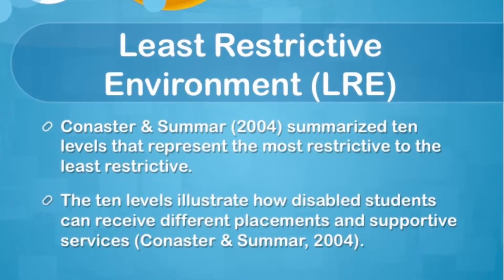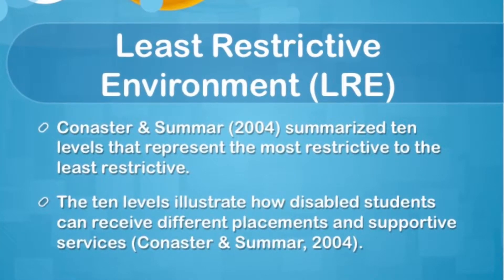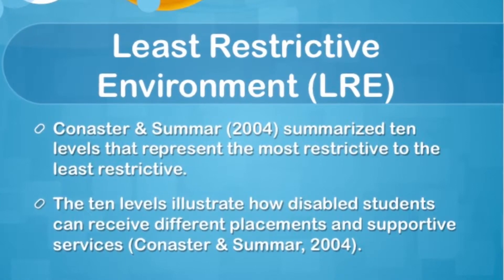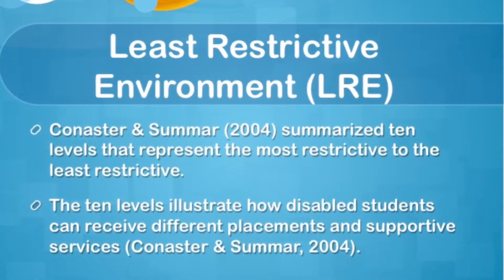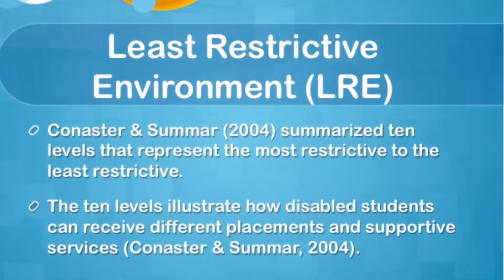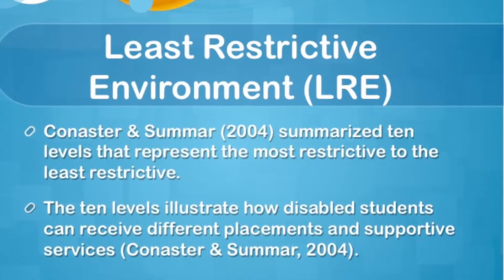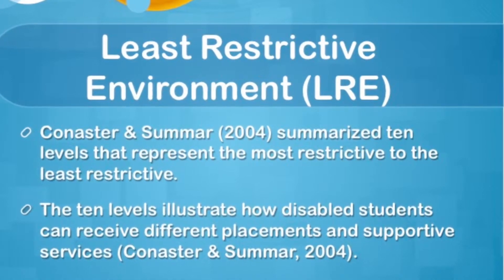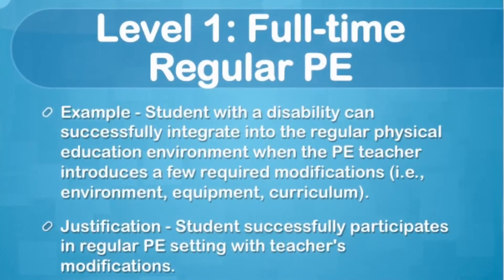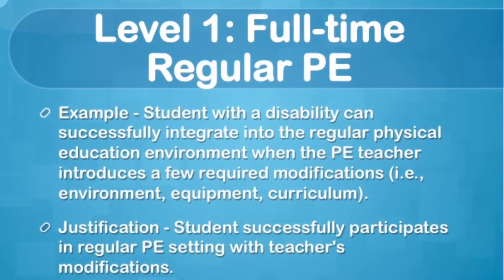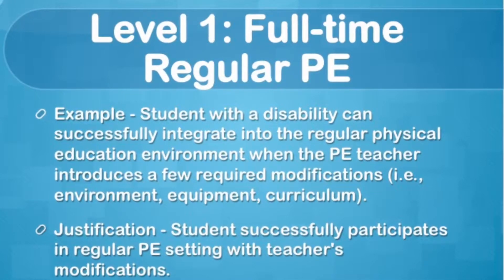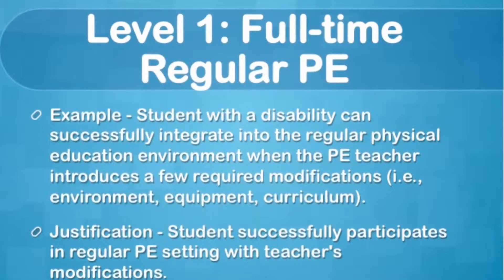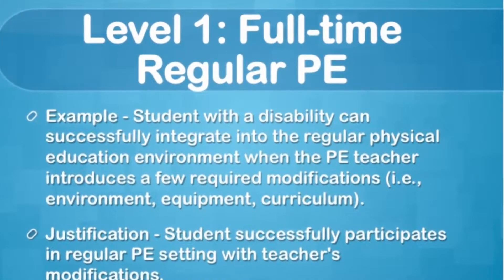We want to make sure that students are in the least restrictive environment. There are ten levels that illustrate how disabled students can receive different placements and supportive services. Level one is regular PE with just some modifications by the PE instructor. This includes different equipment, maybe tricycles for students in wheelchairs and things like that.